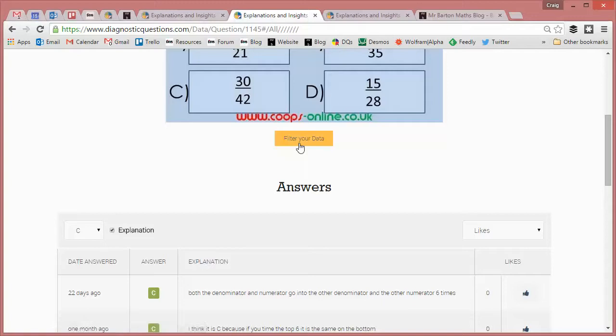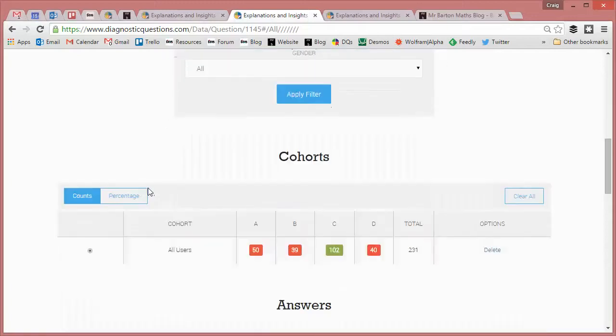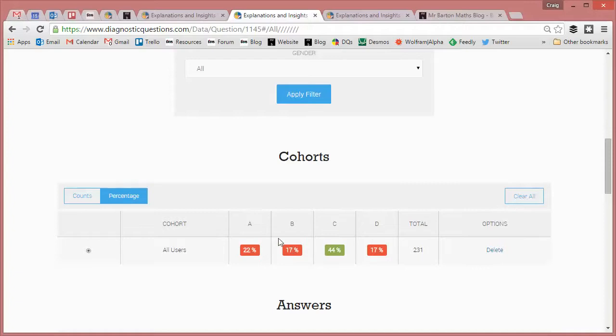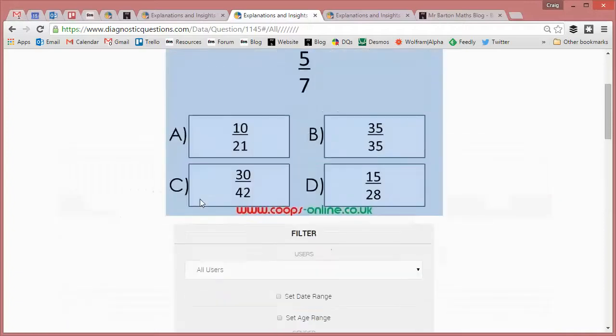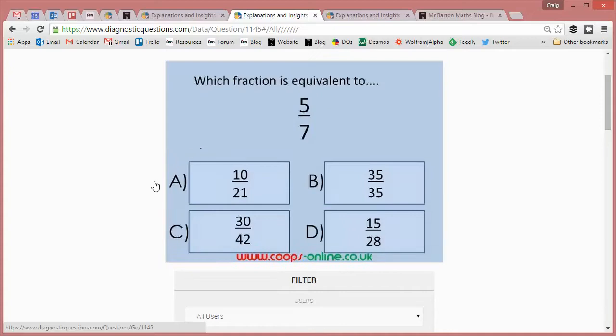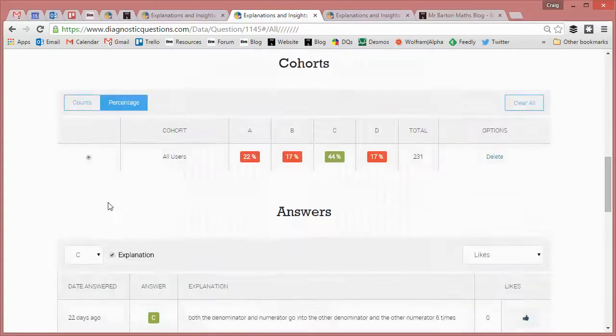If we click on filter your data, we can see that C has only been answered correctly 44% of the time. The wrong answers are shared pretty evenly between the other ones. So why on earth are students going for A as an answer? Why would 10/21 be right?